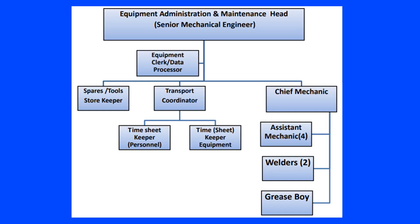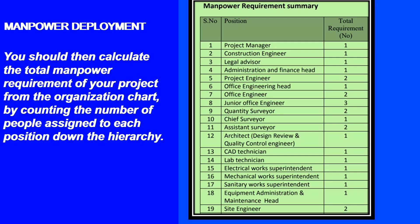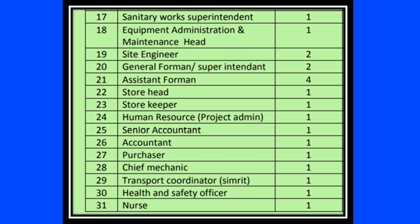You should properly design the project organization chart, starting from the project manager down to unskilled labor. You should then calculate the total manpower requirement from the organization chart by counting the number of people assigned to each position. Remember that all manpower may not necessarily be deployed during the mobilization period — you may request your head office for deployment of prioritized manpower only.